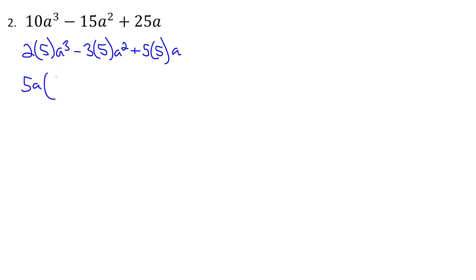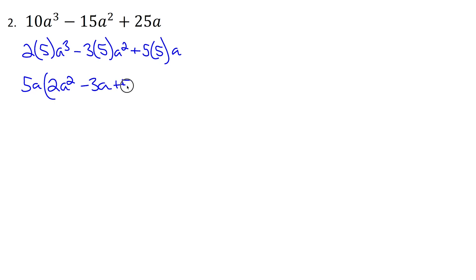We write what's left in each term after dividing out by 5 and a. There's the 2, and a³ divided by a becomes a². Then minus 3 and a² divided by a leaves a single a. Then plus 5. So the factored result is 5a(2a² - 3a + 5) — changed from a sum and subtraction to a product.